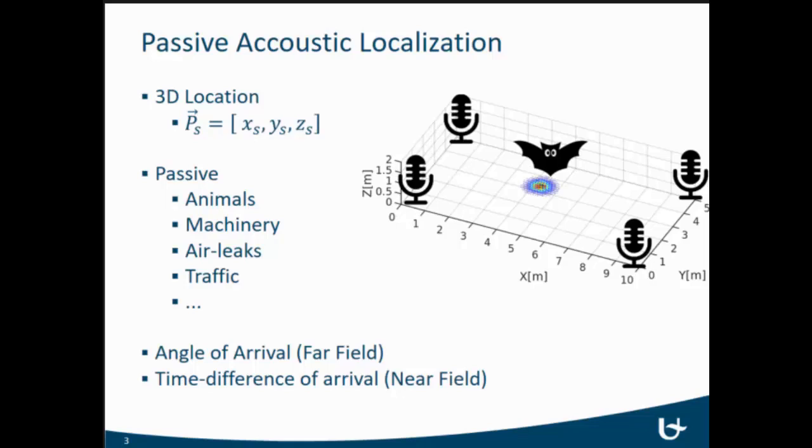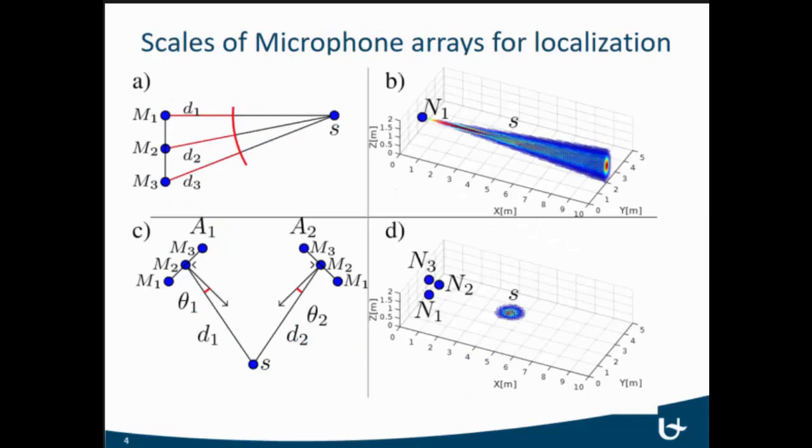To give an example, in the first panel we have three microphones in a linear array, and they can use the angle of arrival localization method. They use the time differences for the sound as well, but because they are a linear array, there is a very big ambiguity, and you cannot accurately estimate the distance of the object. Basically, it becomes angle of arrival localization, and that is the cone shape that you see.